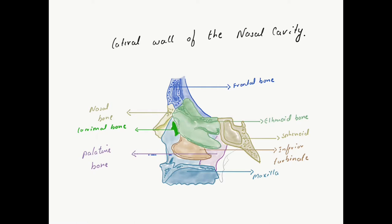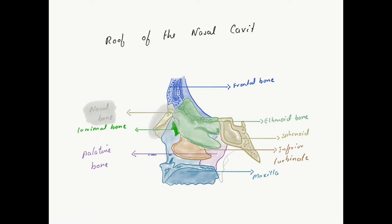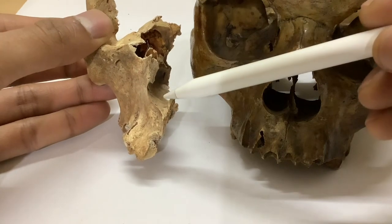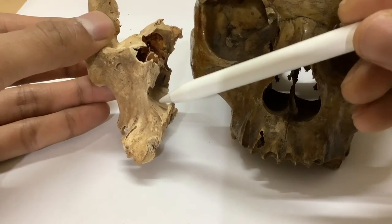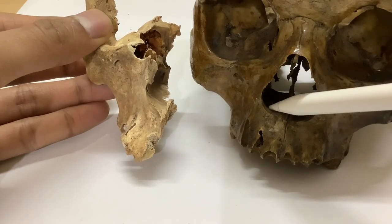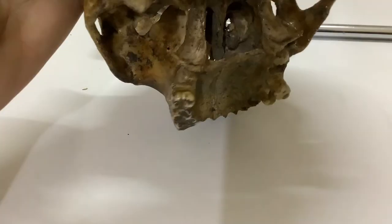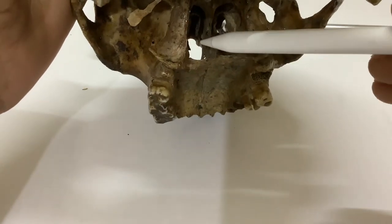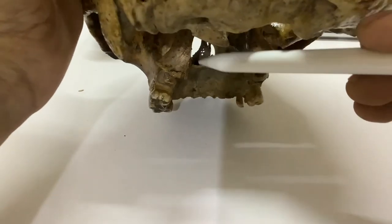The roof of the nasal cavity is actually formed by the nasal bone anteriorly, and posteriorly we have the sphenoid bone. The central portion is contributed by the cribriform plate along with the frontal bone. The floor, on the other hand, is formed by the palatine process of the maxilla, as seen in the articulated skull, and posteriorly we have the horizontal plate of the palatine bone.